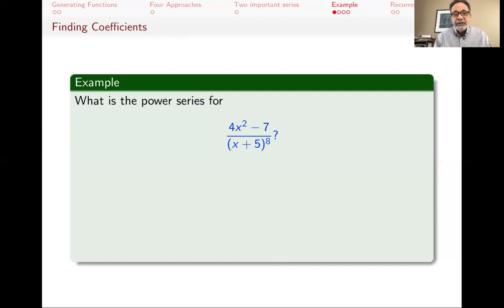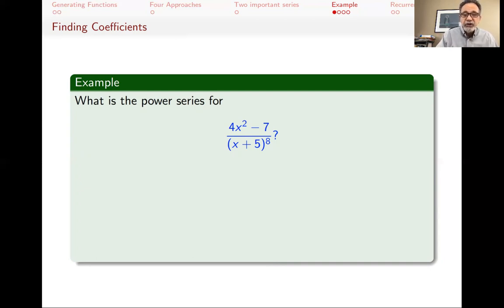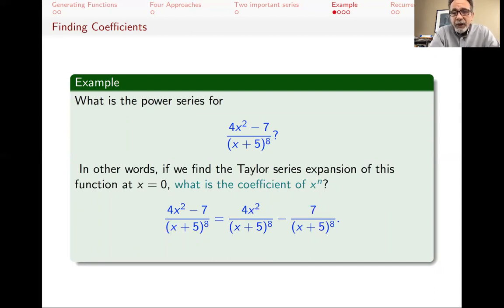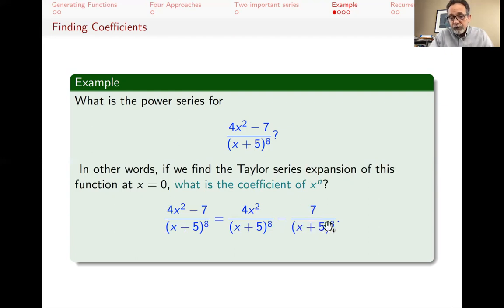Here's our first example. We want to find the power series for (4x²-7)/(x+5)^8. We may have tried to solve a counting problem and found this as the generating function. Now we want to know what the coefficients — what the sequence — is. The first thing we do is separate the fraction and write it as 4x²/(x+5)^8 minus 7/(x+5)^8, so we can handle each piece separately and then combine.